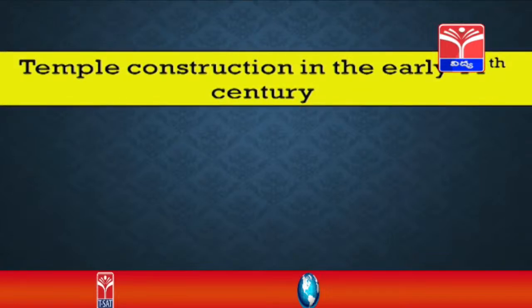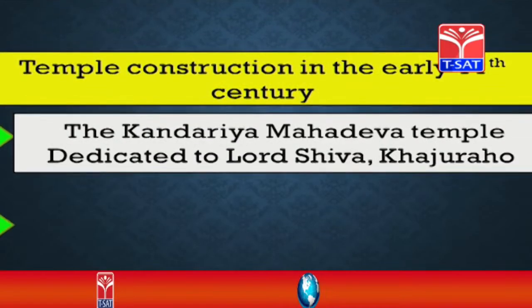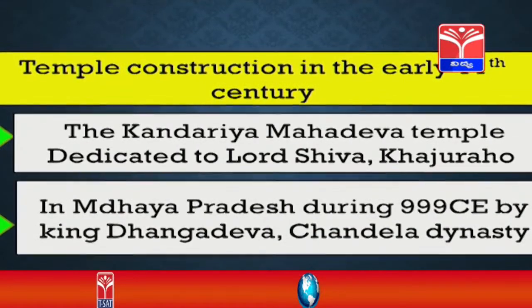Temple construction in the early 11th century. First, we discuss the Kandarya Mahadeva temple, dedicated to Lord Shiva at Kajuraho in Madhya Pradesh, built during 999 CE by King Dhangadeva, who belonged to the Chandela dynasty. Dynasty means a group of rulers or kings from successive generations belonging to one family — for example, the Kakatiya dynasty, the Vijayanagara dynasty, and so on.